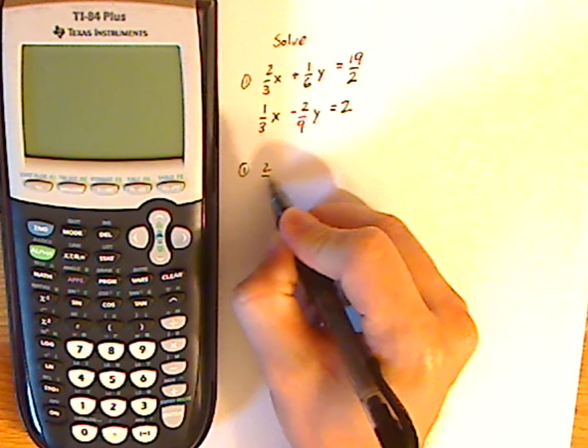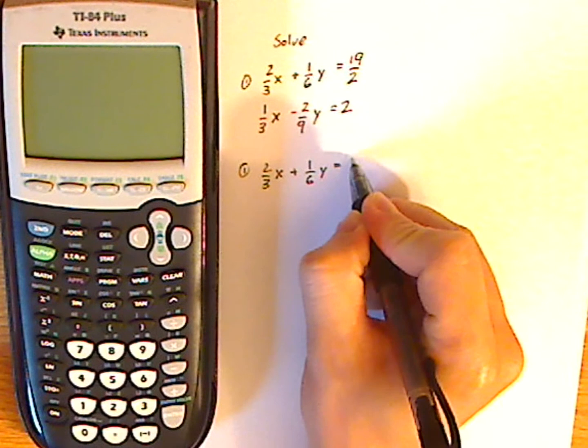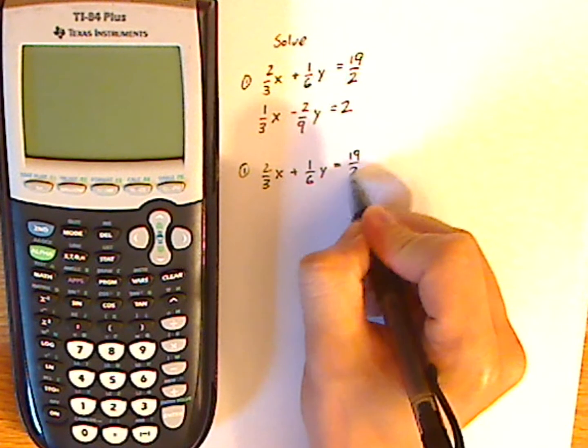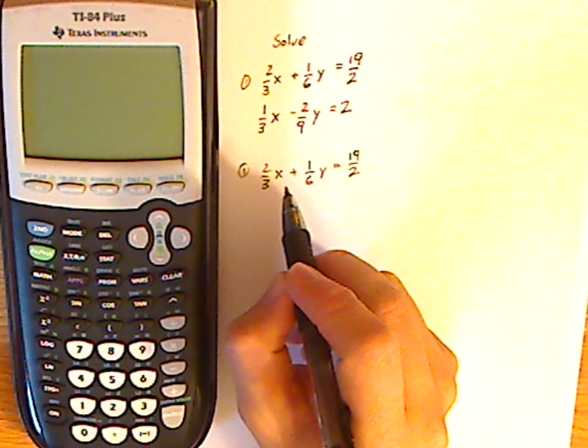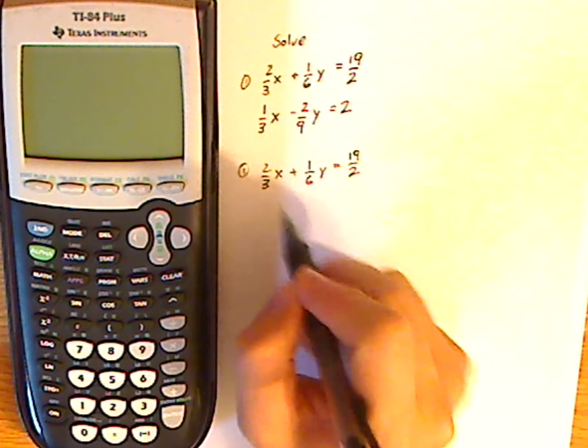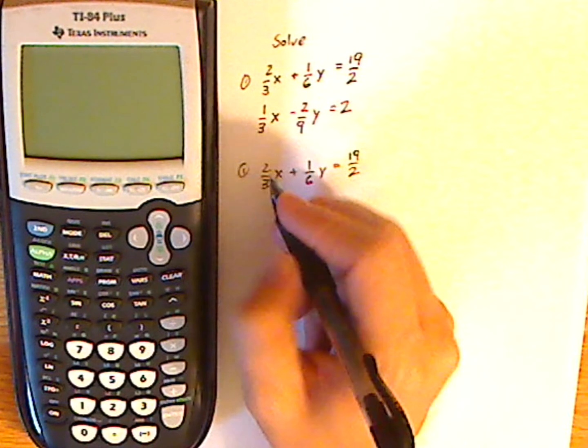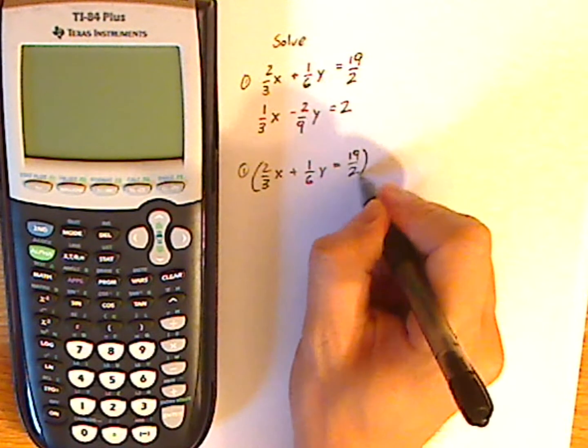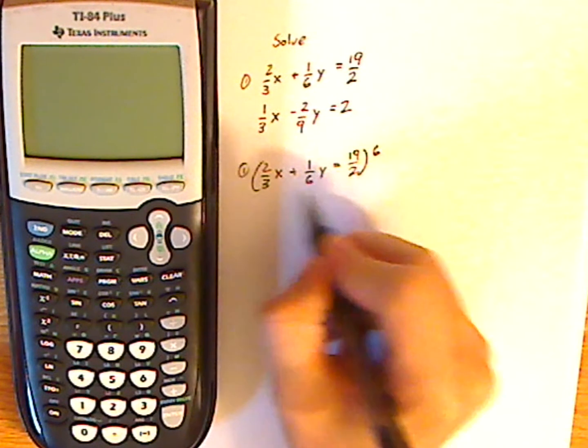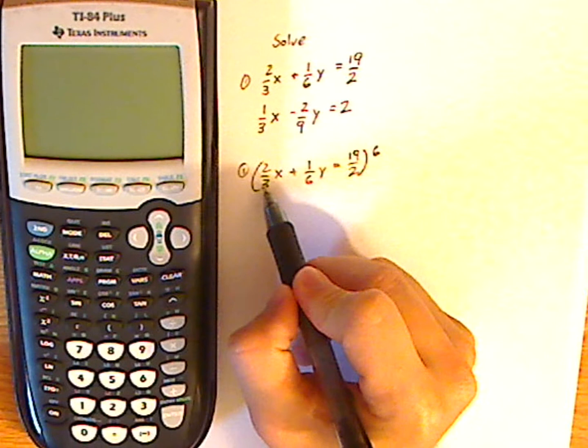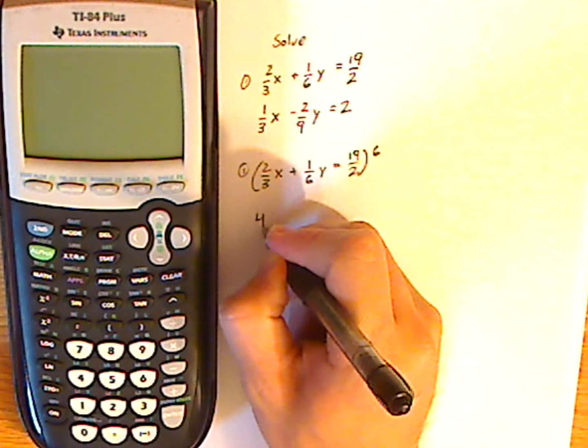With equation number 1, I have 2/3x + 1/6y = 19/2. What I want to do first is take the LCD of 3, 6, and 2 and multiply the whole equation by the LCD. The LCD here is 6. So I multiply everything by 6. When I multiply everything by 6, the denominators are going to cancel out. 3 cancels out with 6, leaving me a 2, so it's 2 times 2, which is 4, so that's 4x.